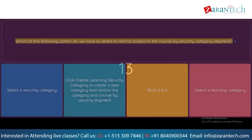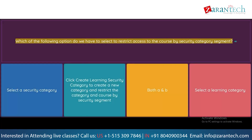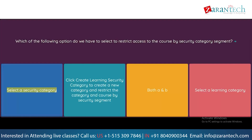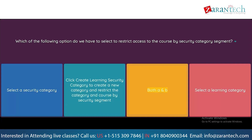Question: Which of the following options do we have to select to restrict access to the course by security category? Option 1: Select a security category. Option 2: Click 'Create Learning Security Category' to create a new category and restrict the category and course by security segment. Option 3: Both A and B. Option 4: Select a learning category.